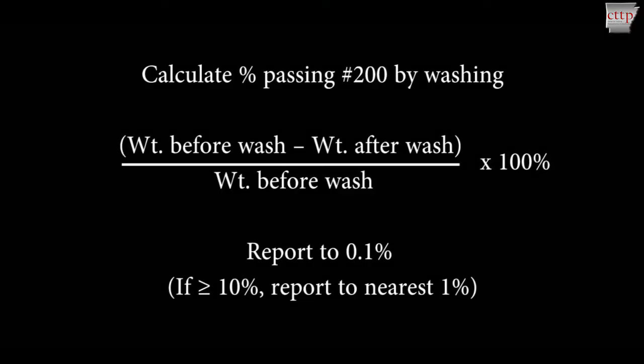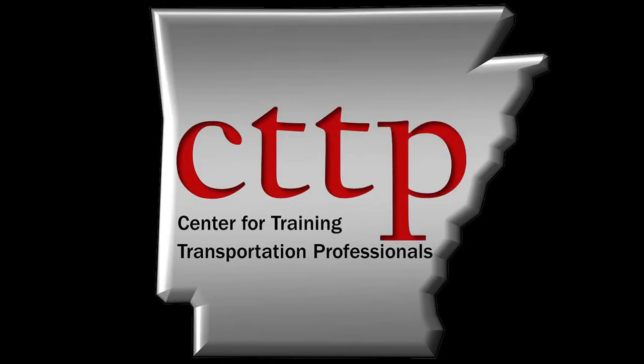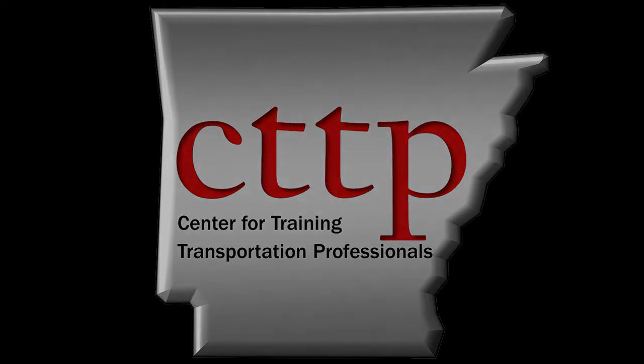Calculate the percent passing the number 200 sieve by washing by dividing the difference in the weights before and after wash by the weight before wash, and report the percent passing to the nearest 0.1%. If 10% or more passes the number 200 sieve, report it to the nearest 1%. Please visit our website at cttp.org for other training videos and modules.